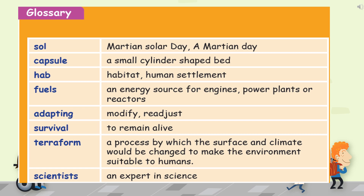Sol means Martian solar day — a Martian day it's called. As we have 24 hours in Earth, in Mars it's called a Martian day. A capsule means a small cylinder-shaped bed. The word HAB means habitat or human settlement.